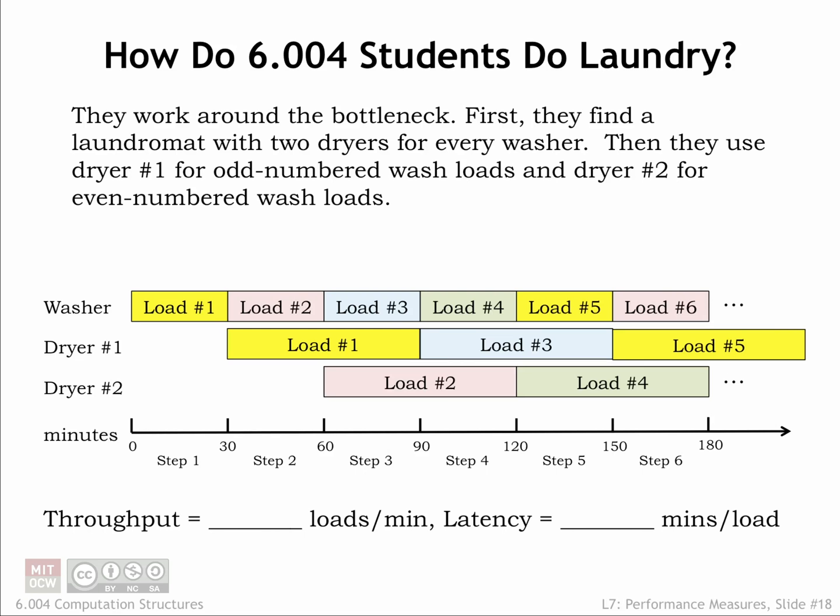6.004 students work around the dryer bottleneck by finding a laundromat that has two dryers for every washer. Looking at the timeline, you can see the plan, which is divided into 30-minute steps. The washer is in use every step, producing a newly washed load every 30 minutes.